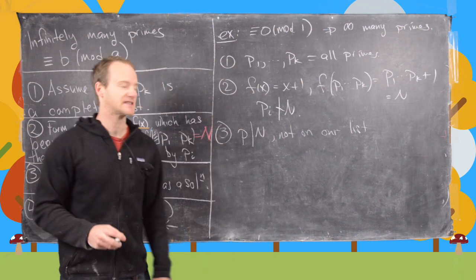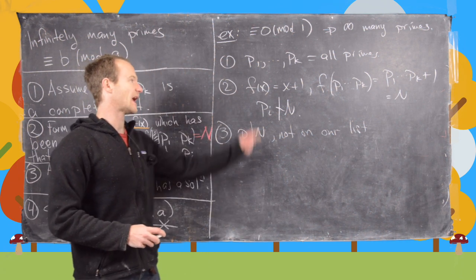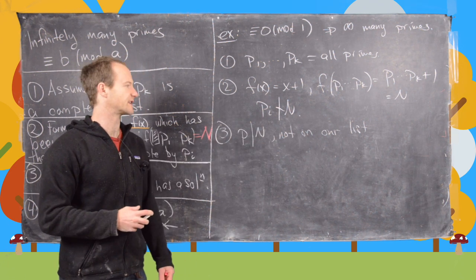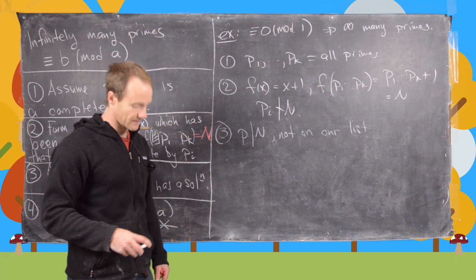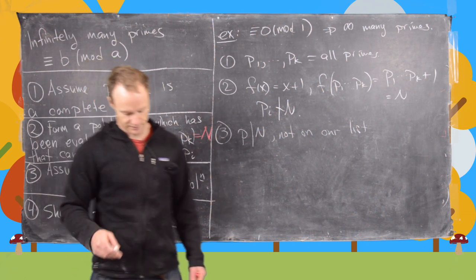So there's actually nothing really fancy that you have to do in this case because we have such a simple polynomial and we're not really looking for primes of any really special form. I'll clean up the board and then we'll sketch a couple more examples.